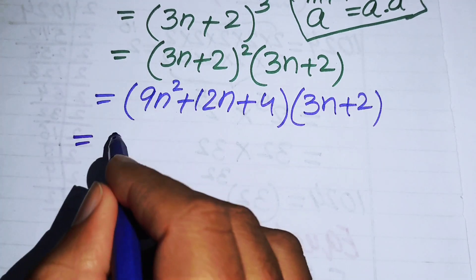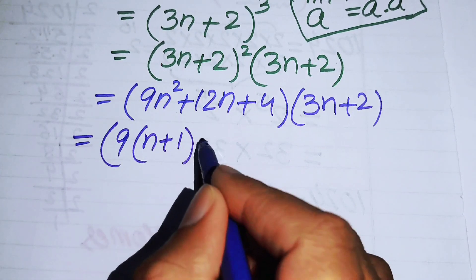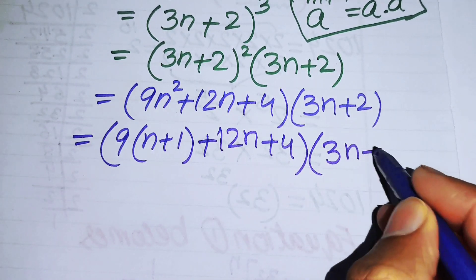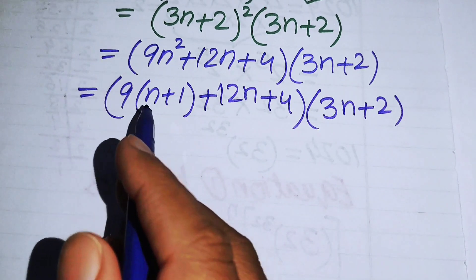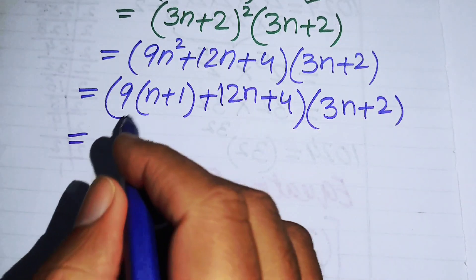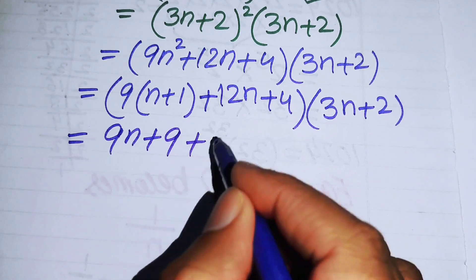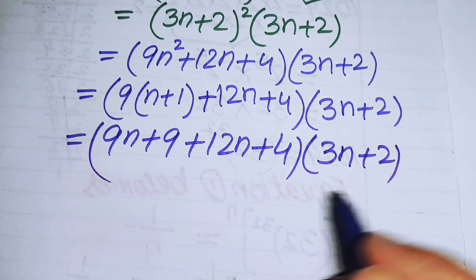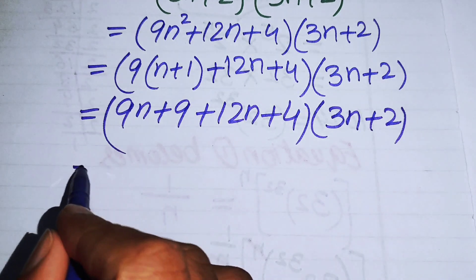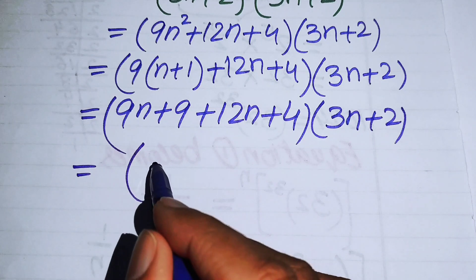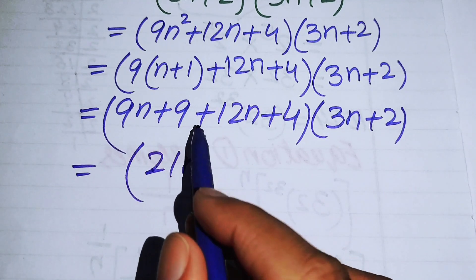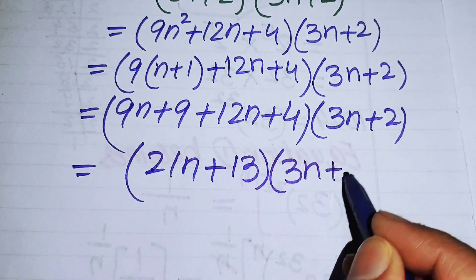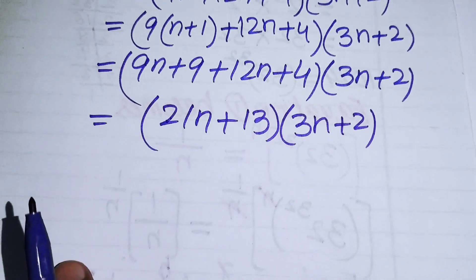We substitute n² = n + 1 into 9n²: this gives 9(n + 1) = 9n + 9. Adding like terms: 9n + 12n = 21n and 9 + 4 = 13. So the expression becomes (21n + 13)(3n + 2).